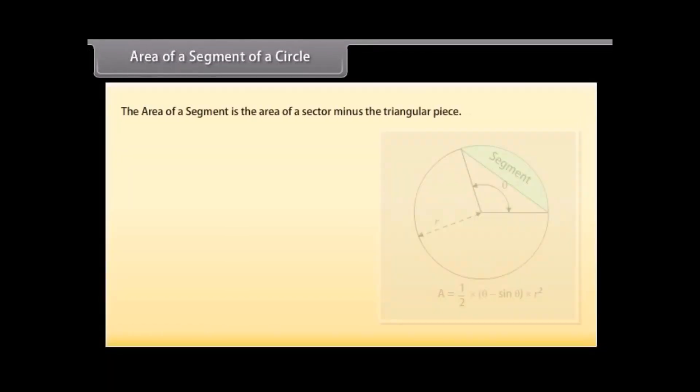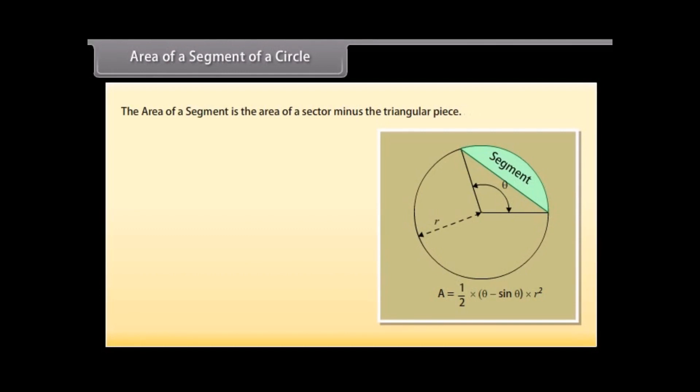Area of a segment of a circle: The area of a segment is the area of a sector minus the triangular piece. Area of segment equals area of sector minus area of triangle.